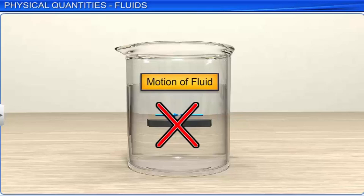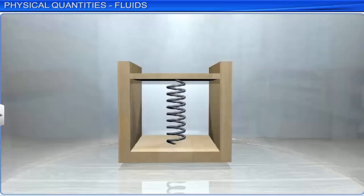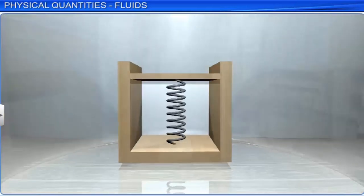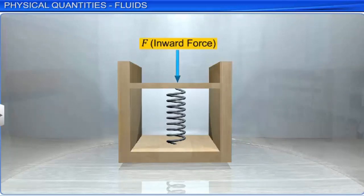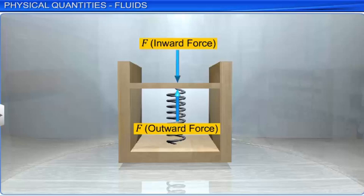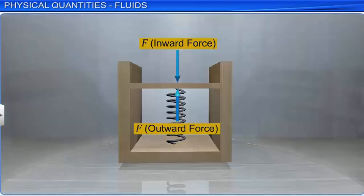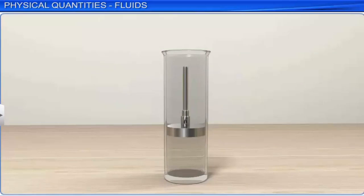The normal force exerted by the fluid at a point can be measured by a device consisting of an evacuated chamber with a spring calibrated to measure the force acting on the piston. The inward force exerted by the fluid on the piston is balanced by the outward force due to compression of the spring. If F is the magnitude of the normal force acting on the piston of area A, then the average pressure P_av is defined as the normal force acting per unit area.